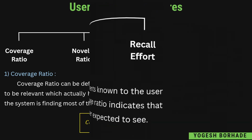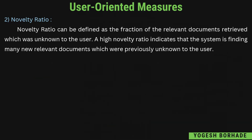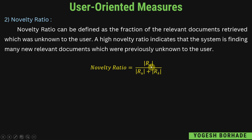Novelty ratio को define किया जाता है fraction of the relevant documents retrieved which were unknown to the user — मतलब relevant हों, retrieved हों, और user को unknown हों। उसको R(u) से denote करेंगे। अगर novelty ratio high है तो वो denote कर रहा है कि system ऐसे नए relevant documents display कर रहा है जो पहले user को expect नहीं थे। यह है आपका novelty ratio।